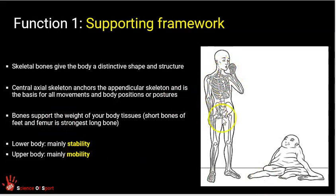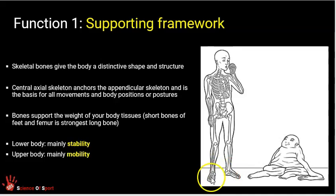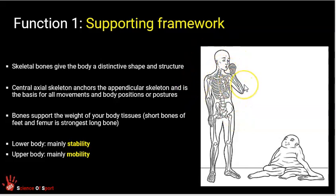We have the axial skeleton — the central part of our skeleton — and the appendicular skeleton, which includes our limbs. Our skeleton has to support all of our body mass. That mass culminates in forces being pushed down through our little feet, the short bones of our ankle, and the long bones of our feet. Generally speaking, the lower body, our limbs and feet, give us stability, while the upper body gives us greater mobility and range of movement in the upper limbs.